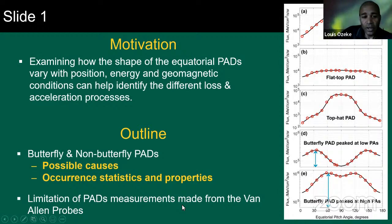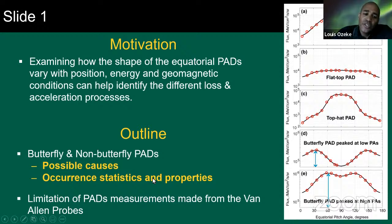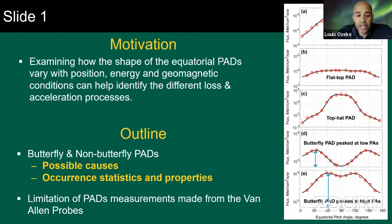A brief outline of this seminar: I'll be talking first about butterfly pitch angle distributions — what are the possible causes, and what are the occurrence statistics and properties as observed during the Van Allen probe mission. Then I'll move on to looking at the non-butterfly pitch angle distributions, again going over some of the possible causes as well as the occurrence statistics. Throughout the presentation I'll be providing a range of different references for some of the causes of these different butterfly and non-butterfly pitch angle distributions, as well as references to statistical studies based on Van Allen probe data. And then finally, I'll move on to showing some of the limitations of just using Van Allen probe data to analyze the different acceleration and loss processes and how to overcome these limitations.